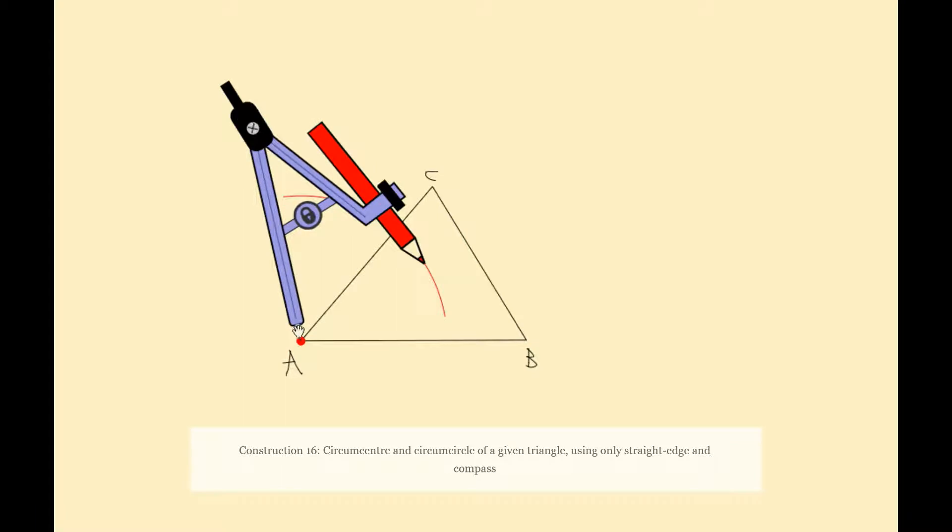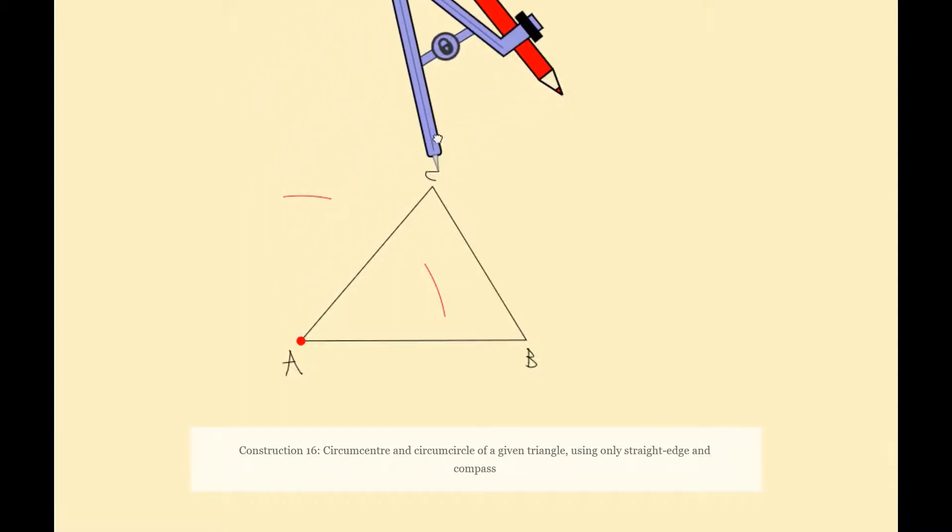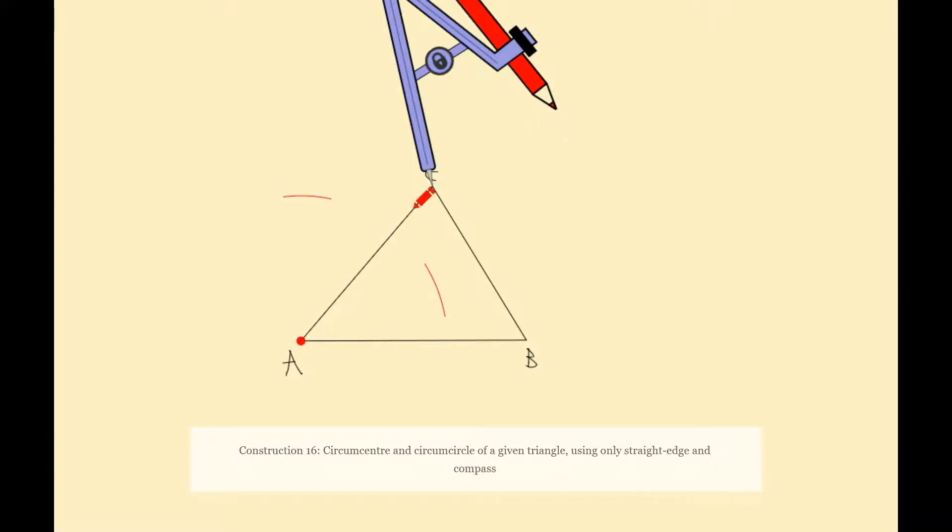Next thing I'm going to do is take the needle of my compass and set it at C. Just make sure that you do not change the radius of your compass. So whatever the distance is from the needle to the tip of the pencil you used for A, you must keep it the same throughout the question. If for some reason your compass moves, best thing is to rub out and start again.